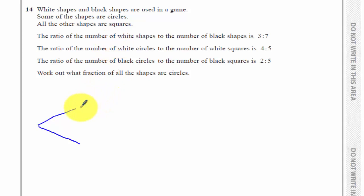So I know I've got white shapes and black shapes. Three tenths of the shapes are white. Seven tenths of the shapes are black. And that comes from this line here.